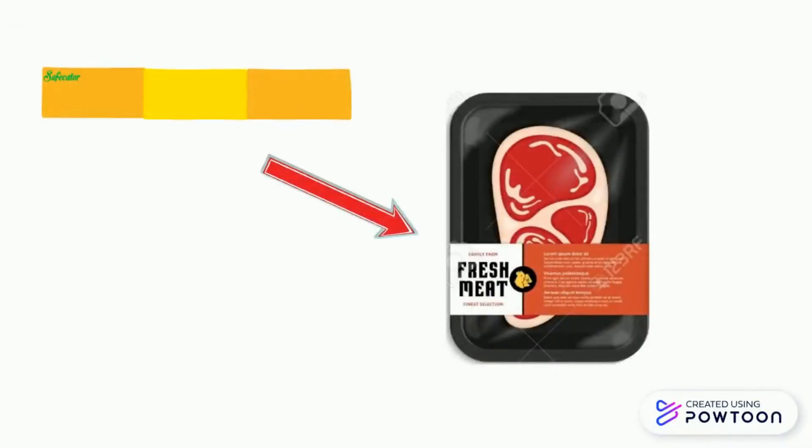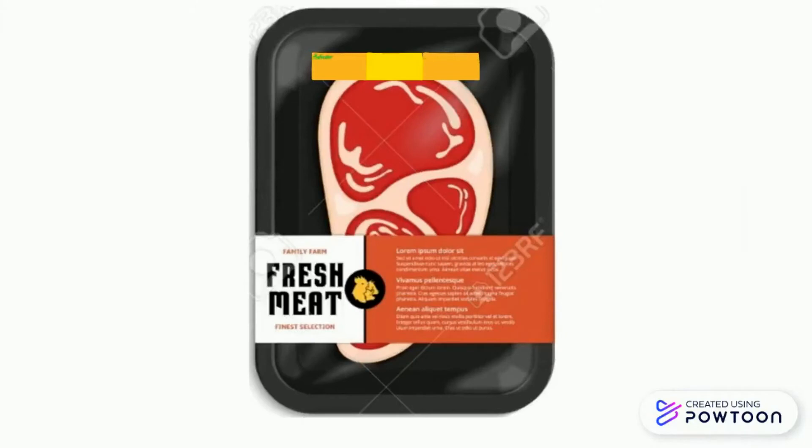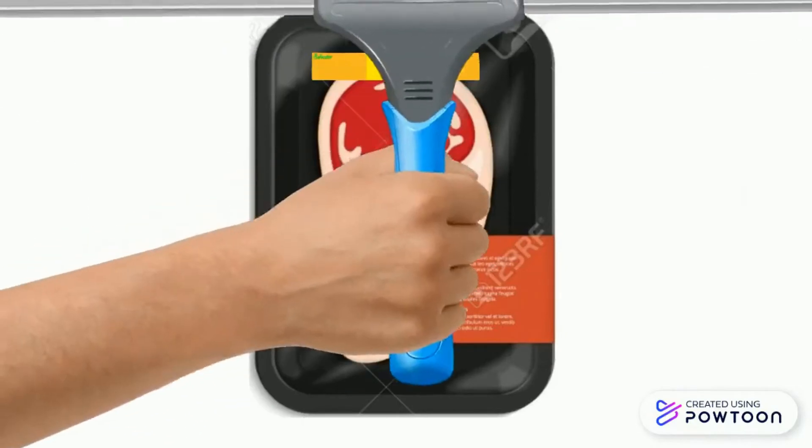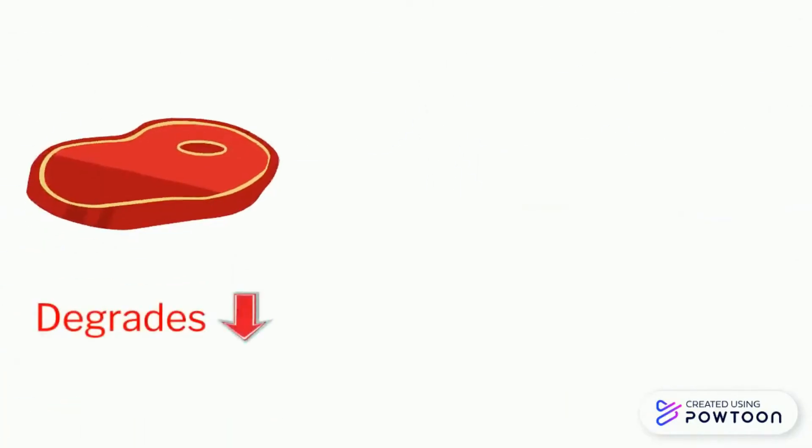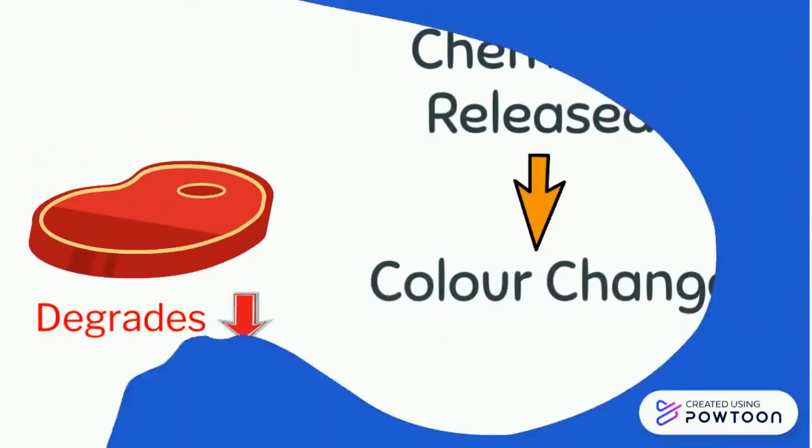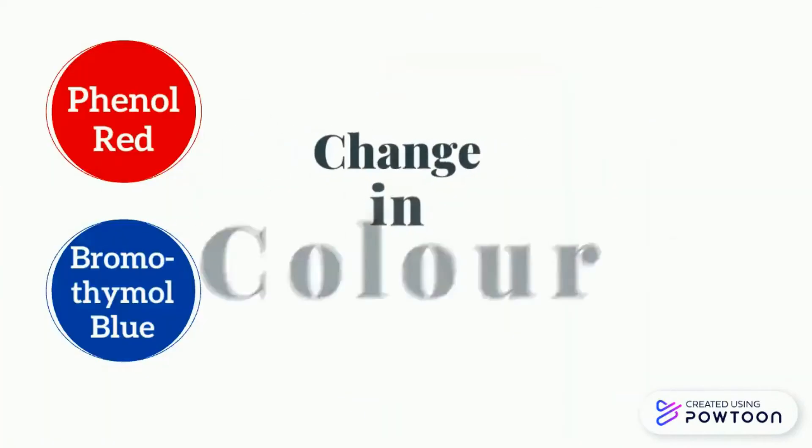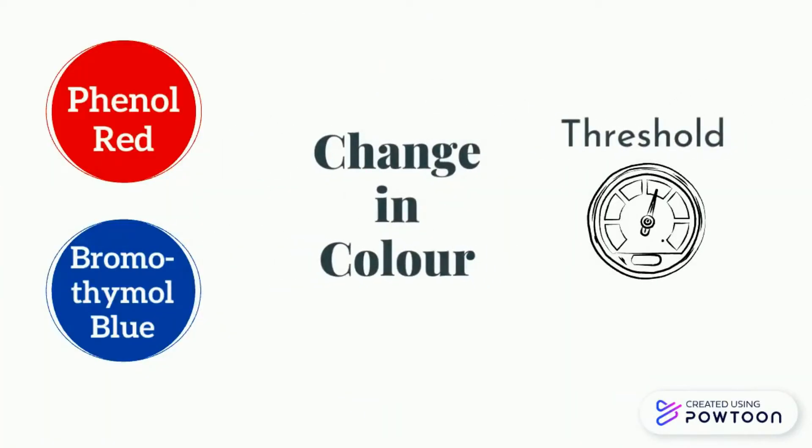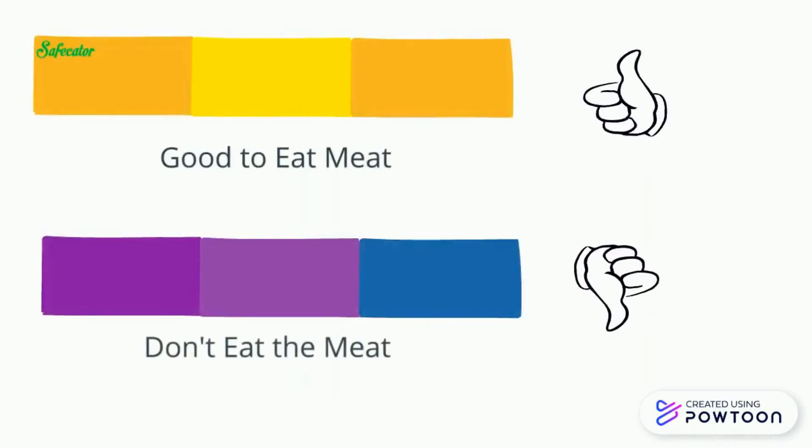How the product works is that the indicators are stuck towards the inside of the container before being exposed to the meat that is located inside. As the meat degrades, certain chemicals are released into the air, and this is what triggers these indicators to change colors. Phenol Red and Bromothymol Blue each would change color, and when these color changes pass a certain threshold, this color change would indicate that the meat is now spoiled and is dangerous to consume.